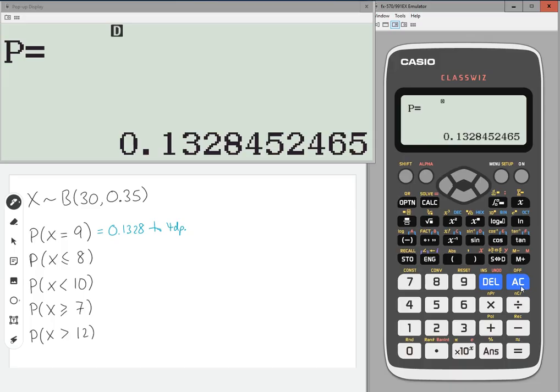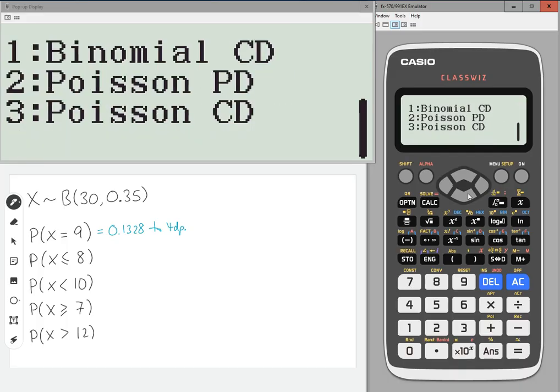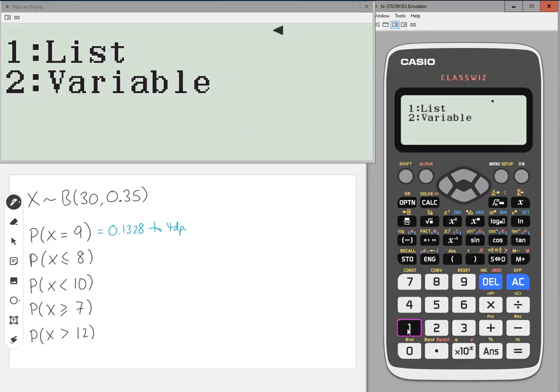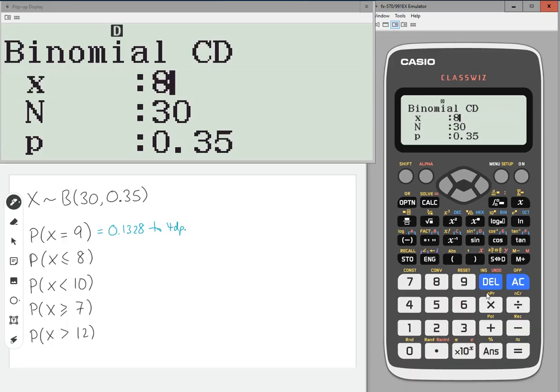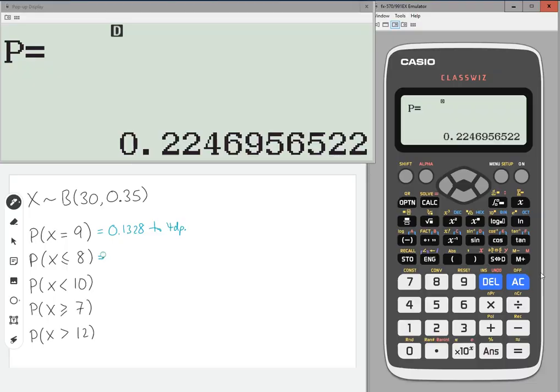Now, the next one is probability of x being less than or equal to 8. The calculator has, if I go back to menu, then number 7, and scroll down to binomial CD. CD finds you less than or equals to, only that. So, in variable, if I then type in 8 here, what this is going to find me is the probability of x being less than or equal to 8. Press equals, so 0.22469, so 0.2247 to 4 decimal places.